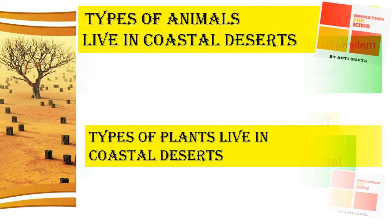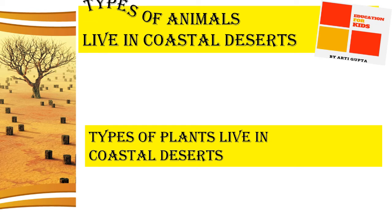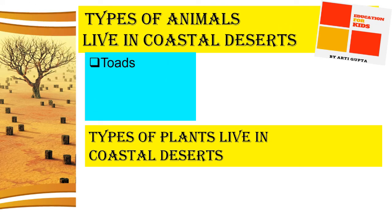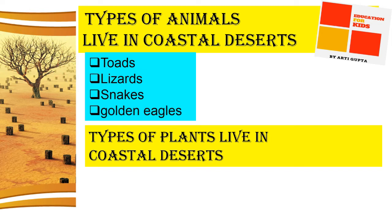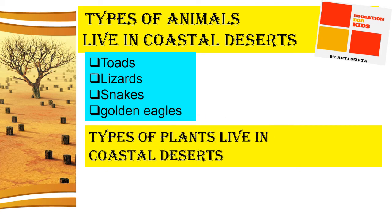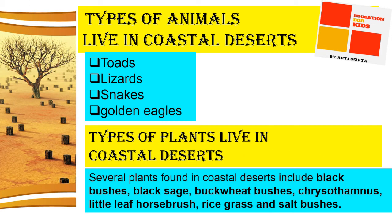The soil condition of coastal deserts is moderately textured with a moderate soil content due to the coastal region. Animals that live in coastal deserts include toads, lizards, snakes, and golden eagles. Plants found in coastal deserts include black bushes, black sage, buckwheat bushes, Chrysothamnus, little leaf horse brush, rice grasses, and salt bushes.